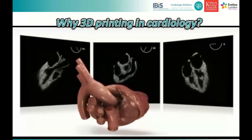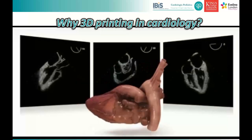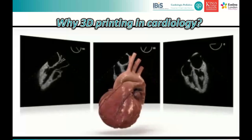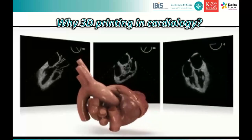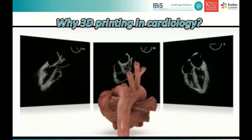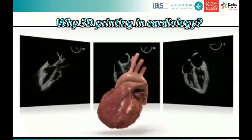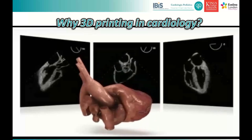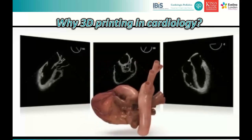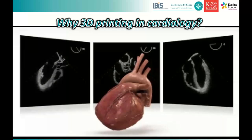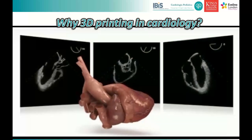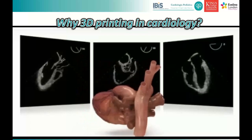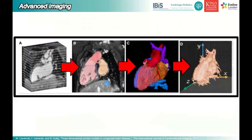When you start as a fellow in pediatric cardiology and congenital adult CHD, it's so complex to understand what a double outlet right ventricle is because we only provide 2D images. You have to try to explain to the surgeon why the VSD is related to the aorta and not the PA, because you only have one single plane. We have 3D imaging tools, so why not capture the 3D imaging?